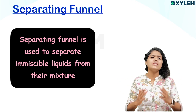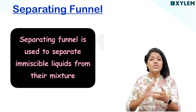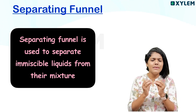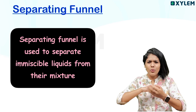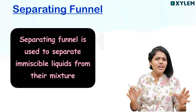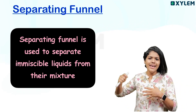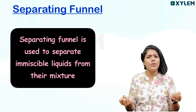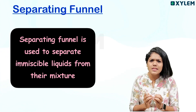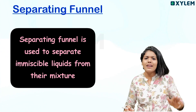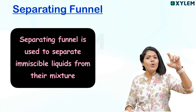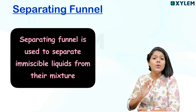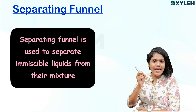What do we mean by immiscible liquids? Immiscible liquids are liquids which never dissolve into each other. For example, if we take a little bit of kerosene and mix it with water, they will never mix with each other. That's what we call immiscible liquids.